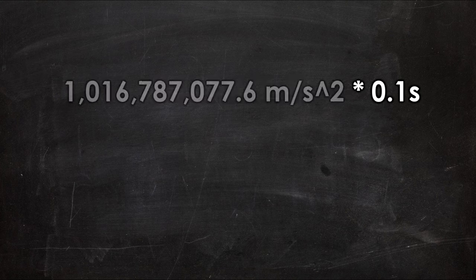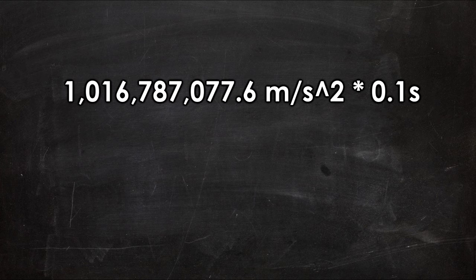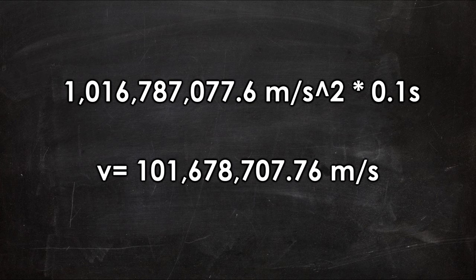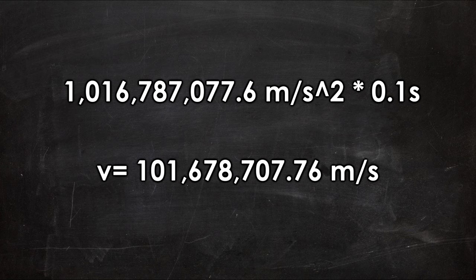Here, we multiply the number by 0.1 again, canceling it out as I mentioned earlier. Solving for v gives us 101,678,707 meters per second.